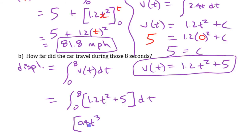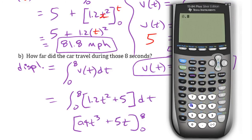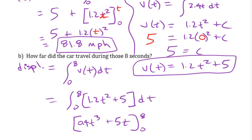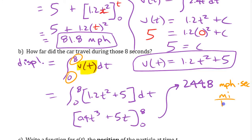Evaluating analytically: the antiderivative is 0.4t³ plus 5t, evaluated from zero to eight. That gives 0.4 times 512 plus 5 times 8, which equals 244.8. But we need to think about the units — the velocity was in miles per hour, but we integrated over seconds, so the units are miles per hour times seconds.